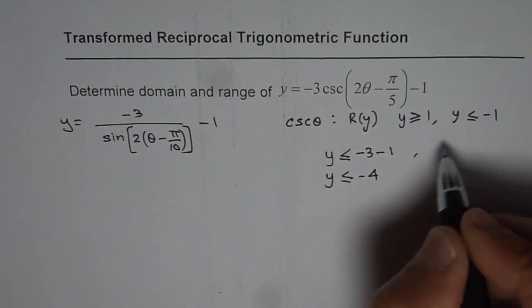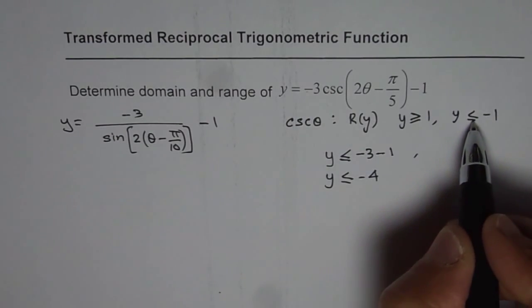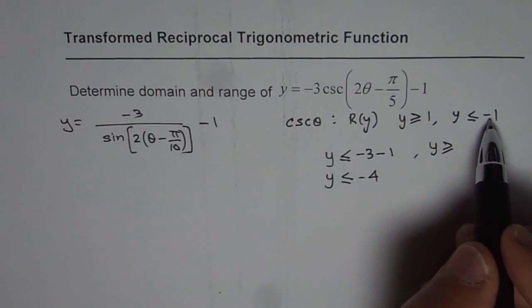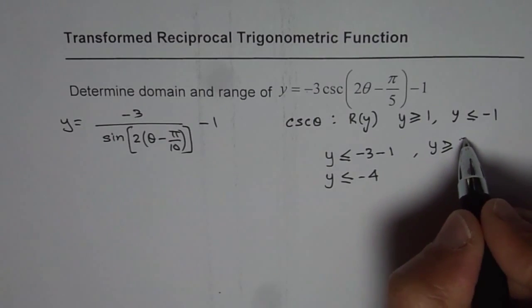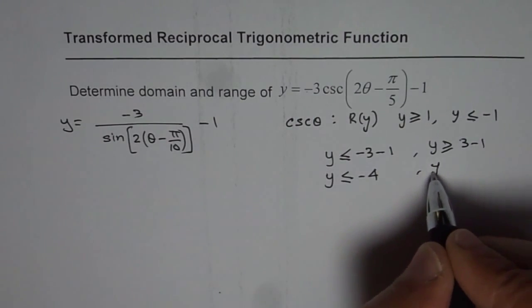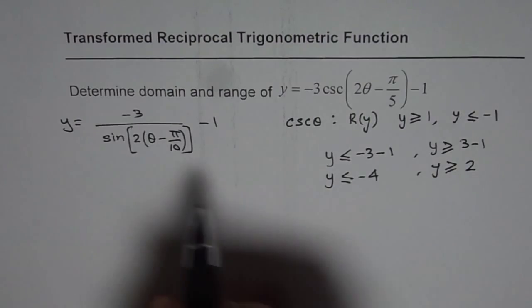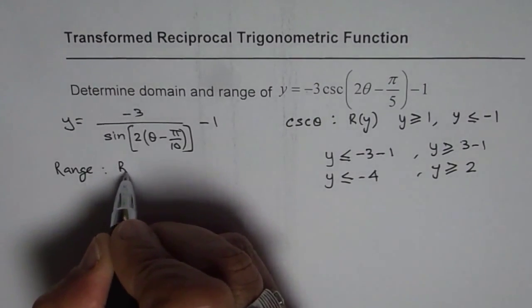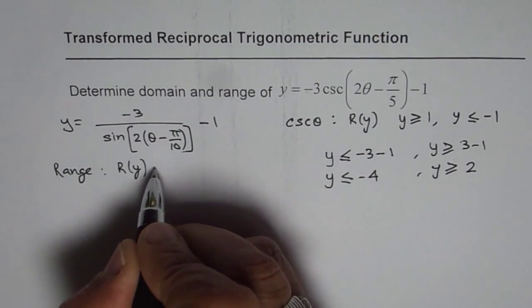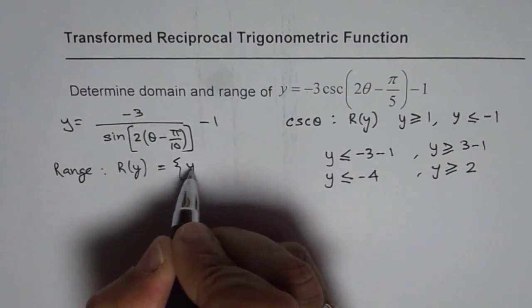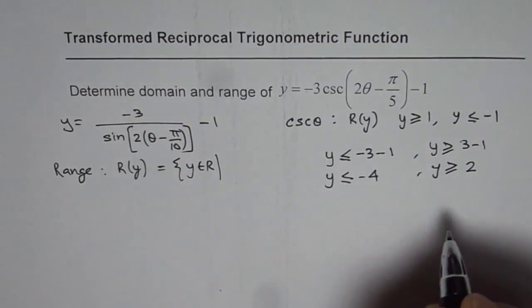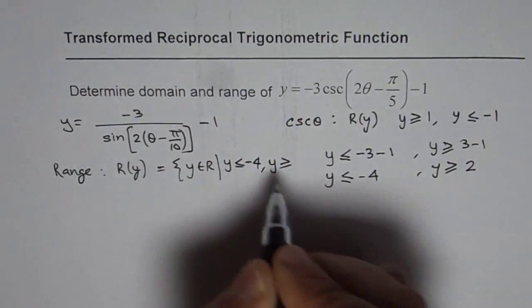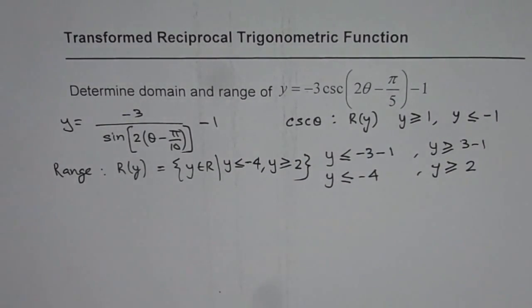On the other hand, multiplying the other inequality by minus 3 requires changing the sign, so y ≥ −3 × (−1), which is 3, then minus 1, giving y ≥ 2. So the range for this function is the set of real numbers where y ≤ −4 or y ≥ 2. That is how we get the range.